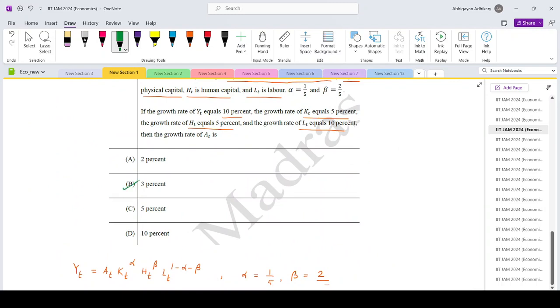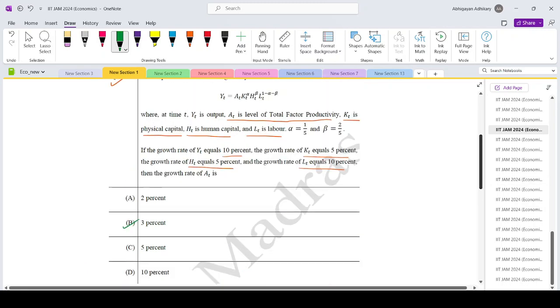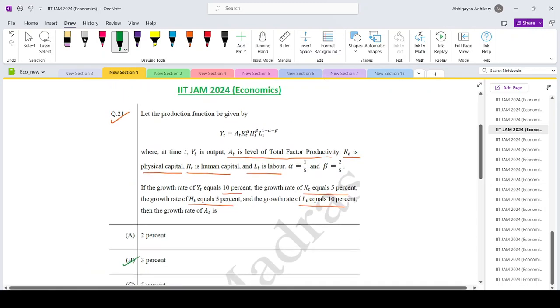So going up to the options, that is option number B from the set. Thank you.